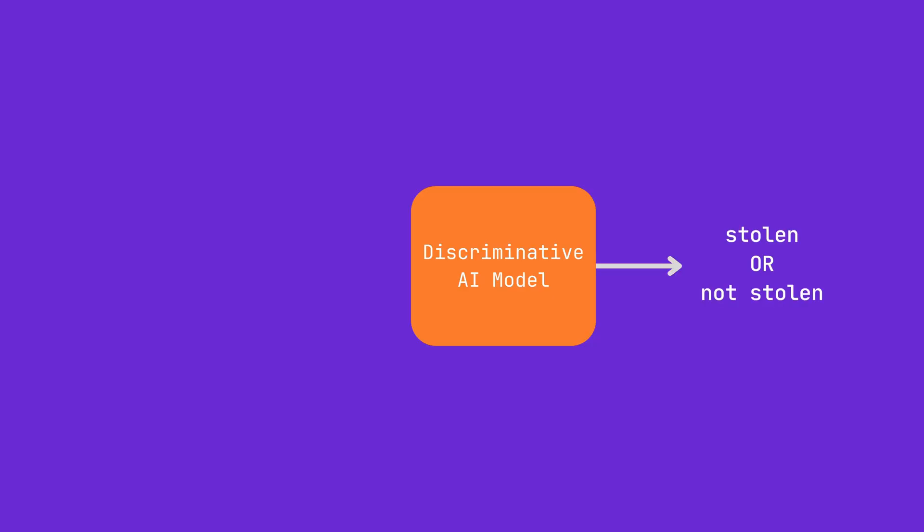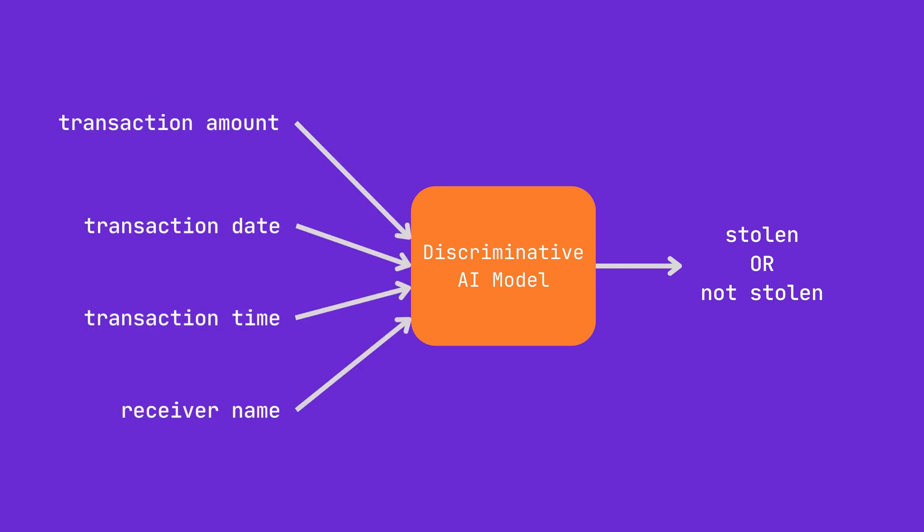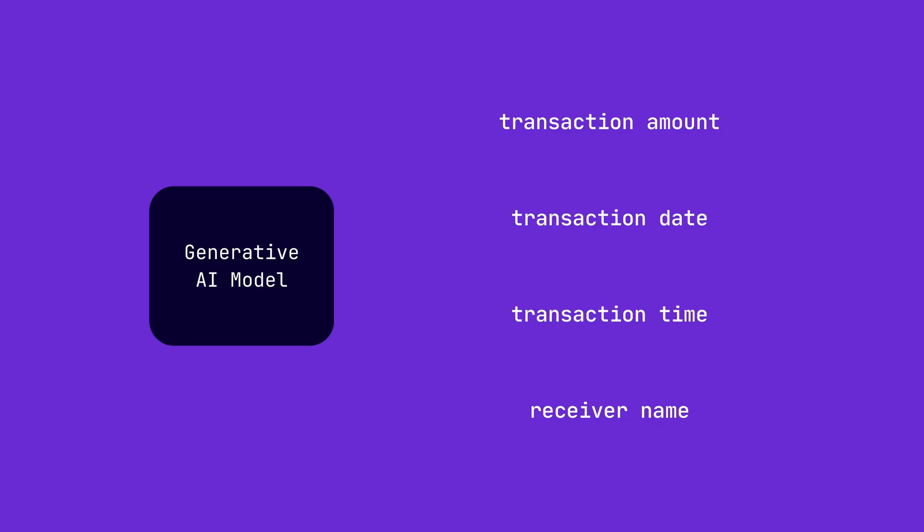The condition in this context is the features of a data point. For example, the goal for one of these models could be to determine whether someone's identity has been stolen given their transaction history, including information like transaction amount, date, or time. In contrast, with generative AI, the goal is to understand how these features relate — so what their joint distribution is — to be able to generate plausible data.